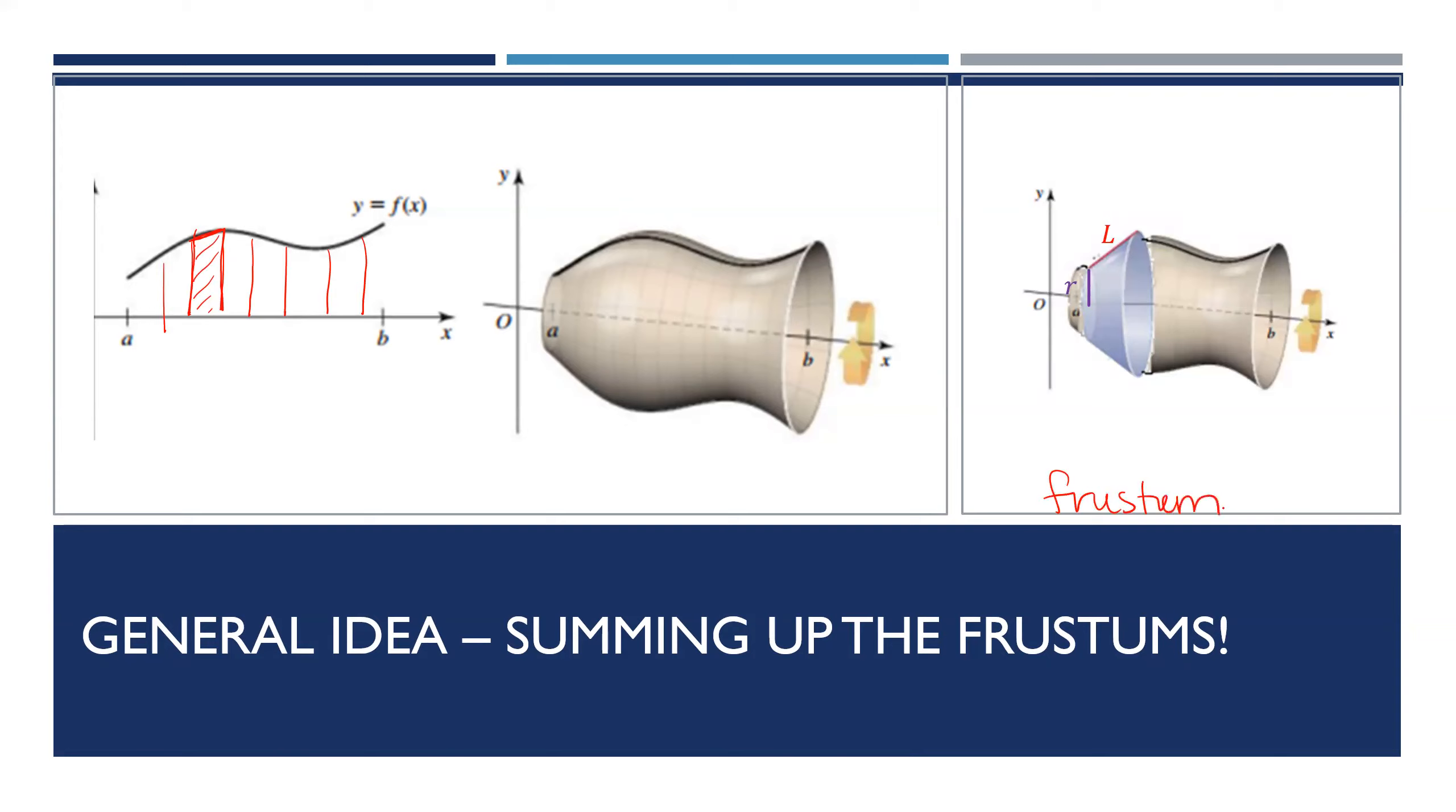When a solid is being cut by two parallel lines like that, we get a frustum. Let's take a look at what these things are.